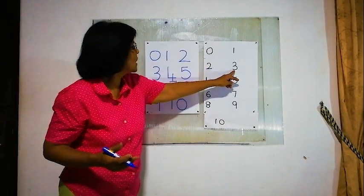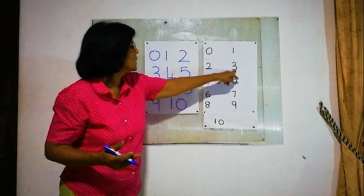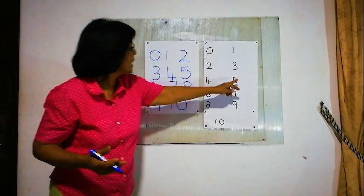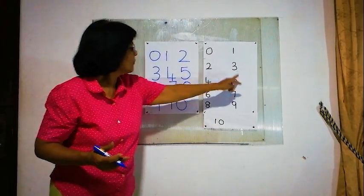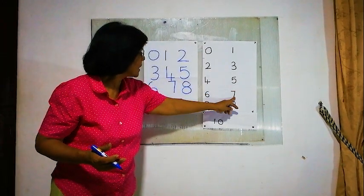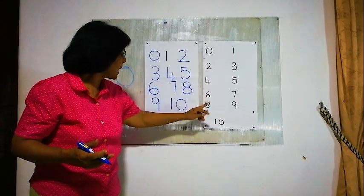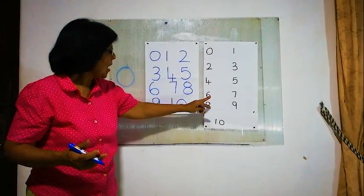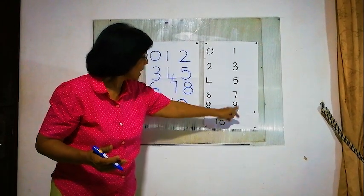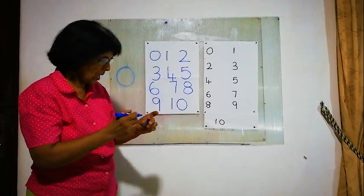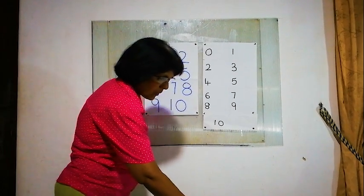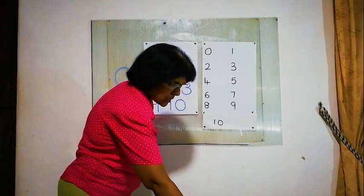After 2 is 3. After 3 is 4. After 4 is 5. After 5 is 6. After 6 is 7. After 7 is 8. After 8 is 9. After 9 is 10, okay?